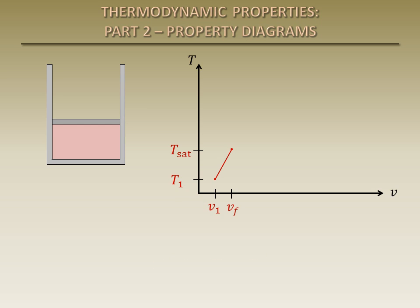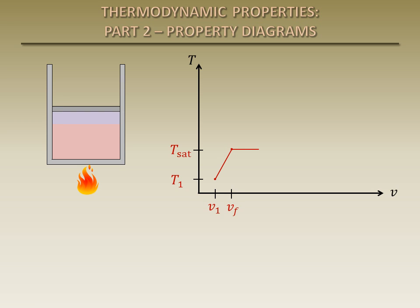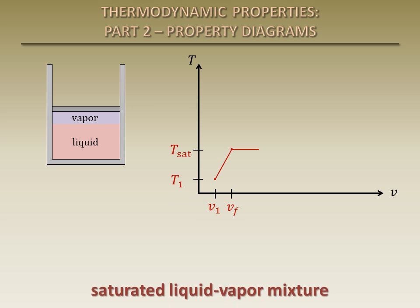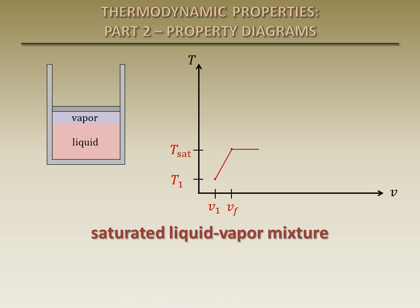As more energy is added to the system, some of the liquid begins to vaporize, increasing the specific volume. However, note that during the vaporization process, the temperature remains constant at the saturation temperature. At this point, the substance has both liquid and vapor phases. This is called a saturated liquid-vapor mixture.